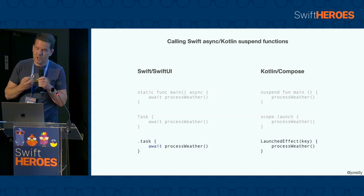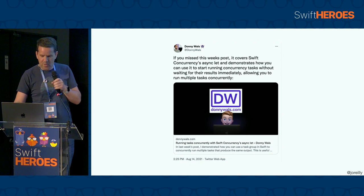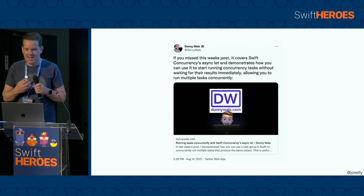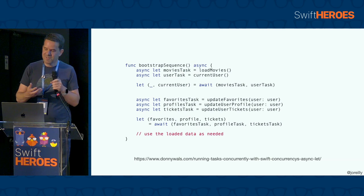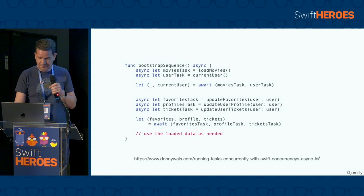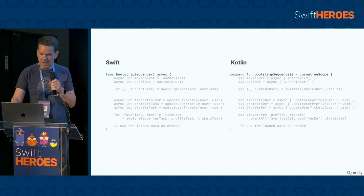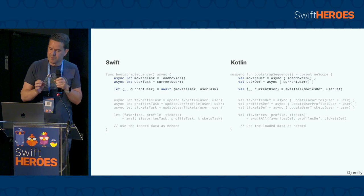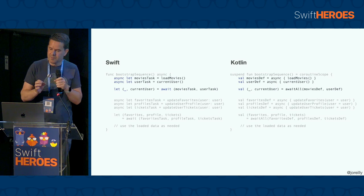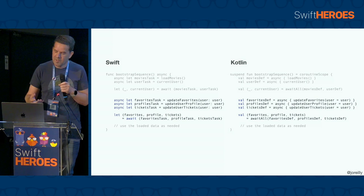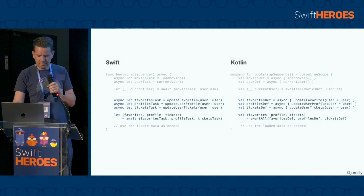Looking at how we would invoke async code like this: it can be invoked from a main function marked as async in Swift and suspend in Kotlin. We can also create a task in Swift and similarly a coroutine in Kotlin from which it can be invoked. Where things get interesting is how we can tie this into our UI lifecycle with automatic cancellation when the UI is no longer shown — using the task view modifier in SwiftUI and launched effect in Compose. Donny's article shows how to invoke tasks concurrently using async let, and the Kotlin equivalent uses the async coroutine builder to kick off tasks that run concurrently and wait on them.